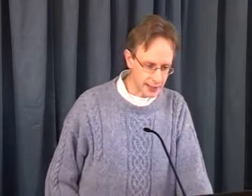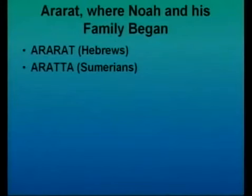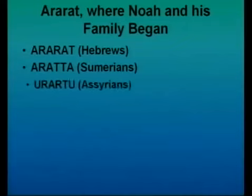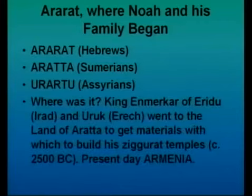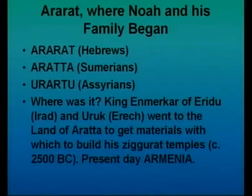Now let's look at Ararat and where Noah and his family began. According to Genesis and the Hebrews, Ararat was not just a range of mountains — it became a place just below the mountains. The Sumerians refer to the same place, except they call it Arata. The Assyrians call it Oratu. It was famous and mentioned in their clay tablets very early on. There was a king in the ancient Mesopotamian civilizations called King Anmerka, which some people consider was Nimrod, mentioned in Genesis.